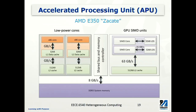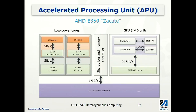Private memory is accessible only to a particular core, while local memory is shared by a group of cores. On this chip, there is a shared memory bus and memory controller which help the low-power cores and GPU units communicate with the outside memory subsystem. There is also DDR3 system memory which is much larger and slower, and it is shared by all the units. This is what we call global memory in the context of OpenCL.